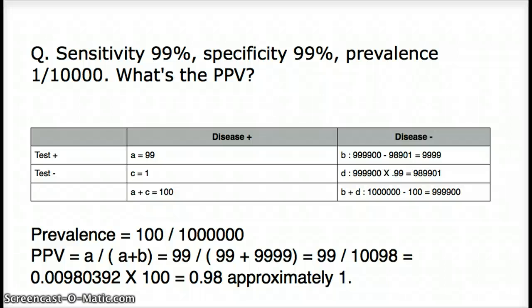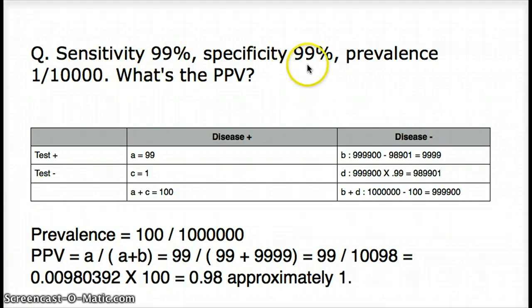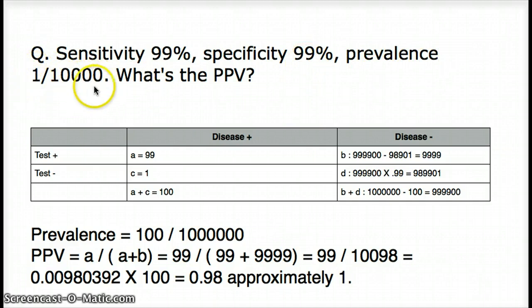This question is a biostat question. They're saying that the sensitivity is 99%, the specificity is also 99%, but the prevalence is 1 out of 10,000. Now, what is the positive predictive value?